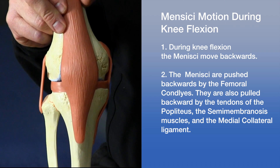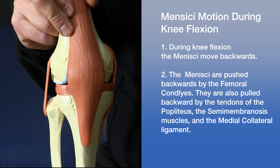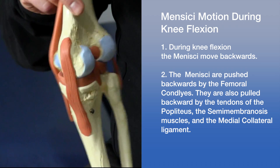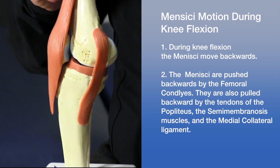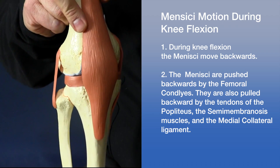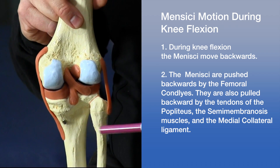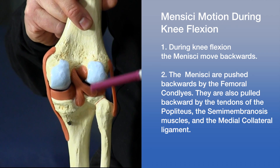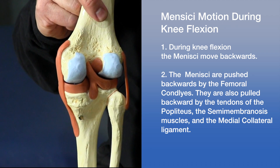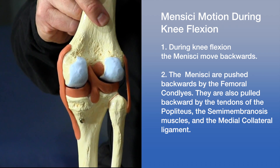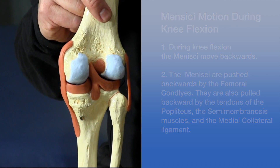During knee flexion, the menisci move backwards, pushed by the condyles of the femur. They are also pushed backwards by the tendons of the posterior muscles — the popliteus, which runs in the back, and one of the hamstrings, the semimembranosus muscle — and by the medial collateral ligament on the side. So several structures are involved in pushing the menisci back during knee flexion: the popliteus and semimembranosus muscles, and the medial collateral ligament.